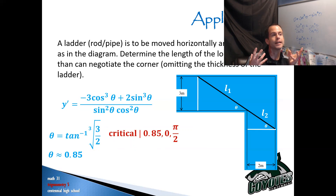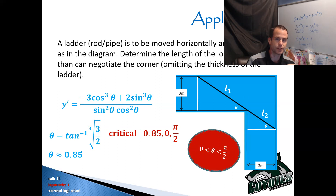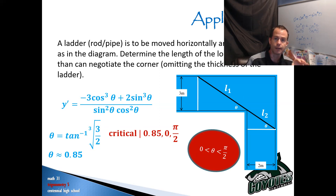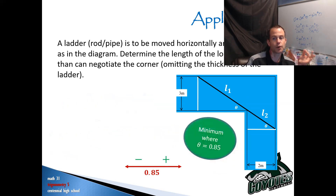Here we go again in context of the question: I actually can't have theta equal to zero and I can't have theta equal to π/2. Essentially, if theta was zero or π/2, I'm just standing in a hallway — I'm not actually trying to turn anything. In the context of this question, theta has to be greater than zero and less than π/2, which means 0.85 is the only critical number I plot on a number line. Testing to the left and to the right, I end up with a negative and a positive.